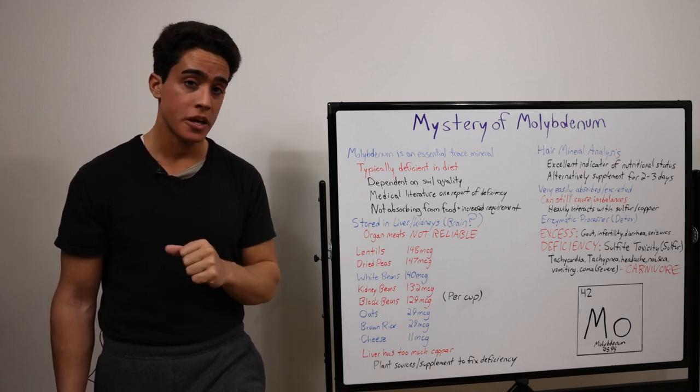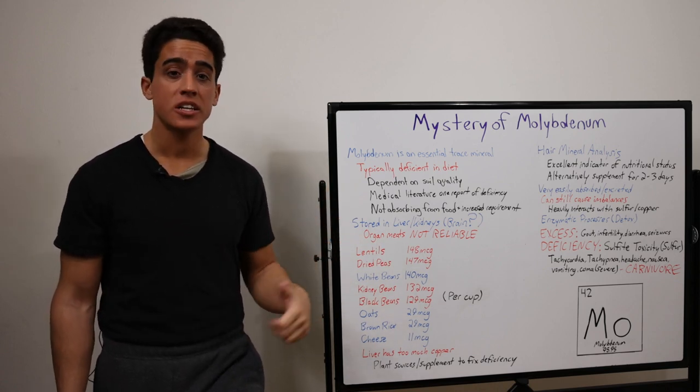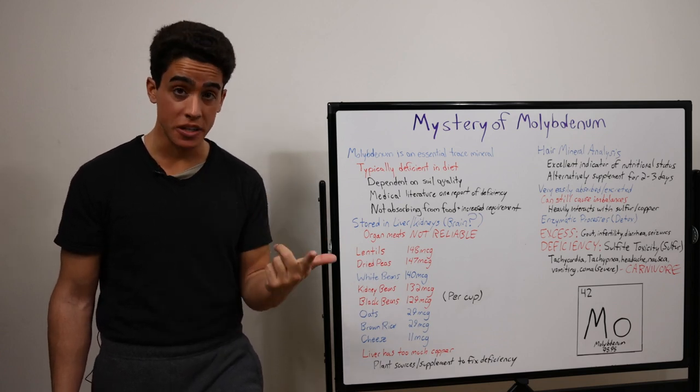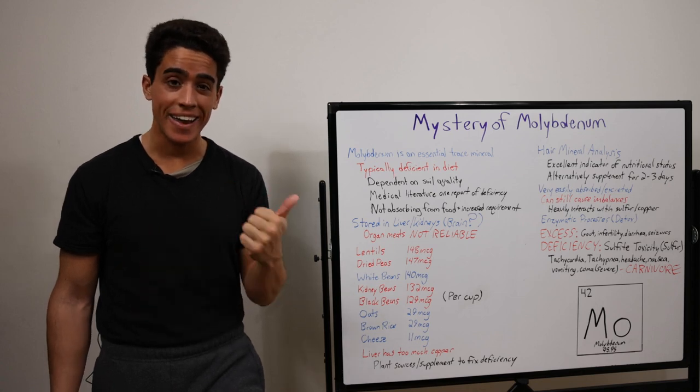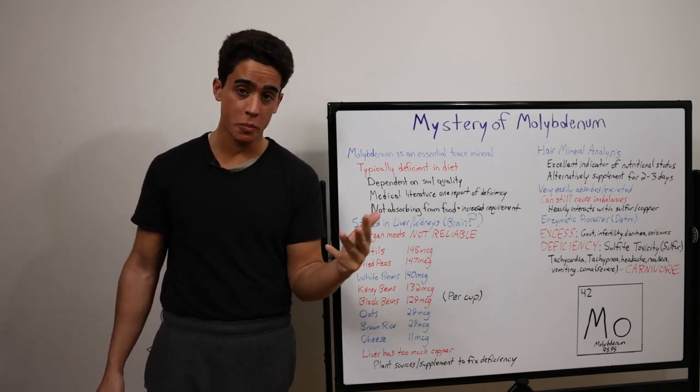Deficiency of molybdenum causes sulfite toxicity. Symptoms being tachycardia and tachypnea, which is elevated heart rate and shallow breathing, headache, nausea, vomiting, even coma.